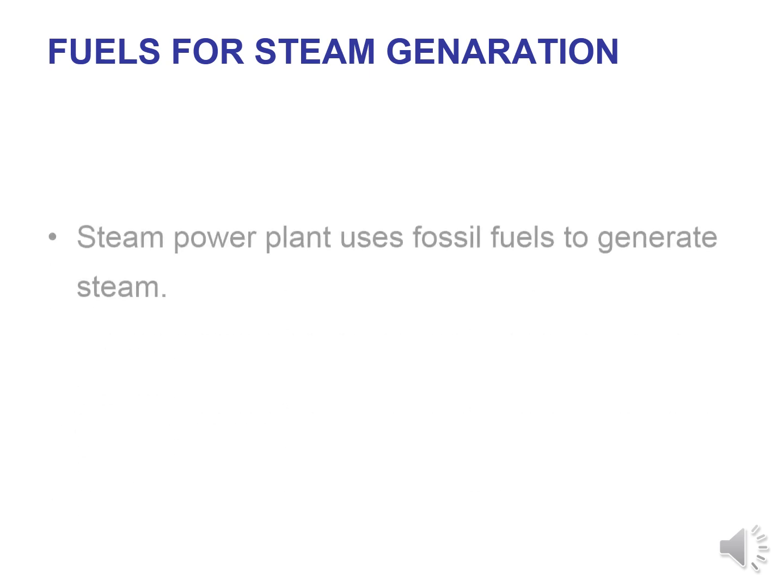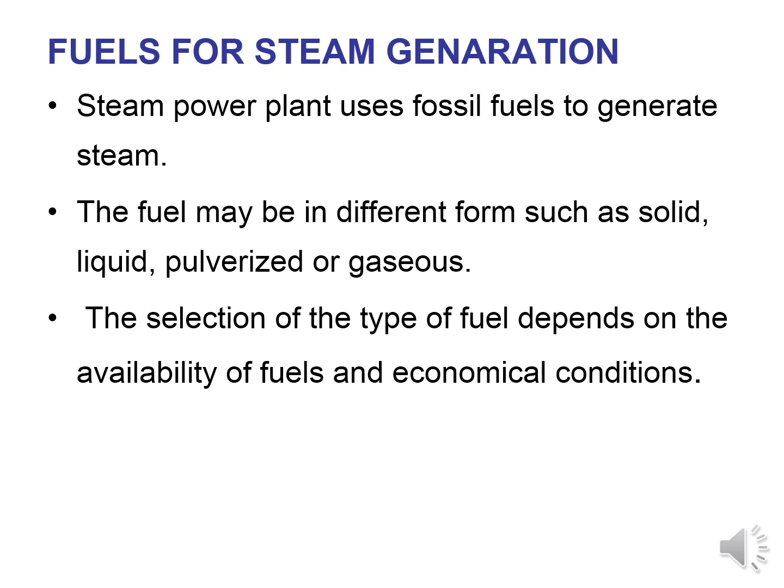Steam power plants use fossil fuels to generate steam. Fossil fuels include coal, petrol, diesel, and others. The fuel may be in different forms — solid in the form of lumps, liquid, pulverized in powdered particles, or gaseous. The selection of fuel type depends on the availability of fuel and economic conditions. If natural gas is available, it is used; otherwise, petrol, diesel, or coal, wood, or charcoal are used.